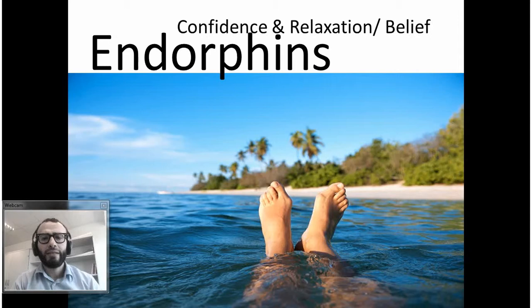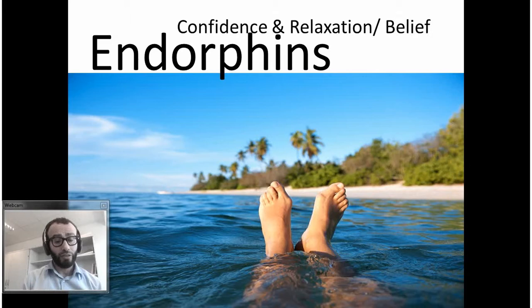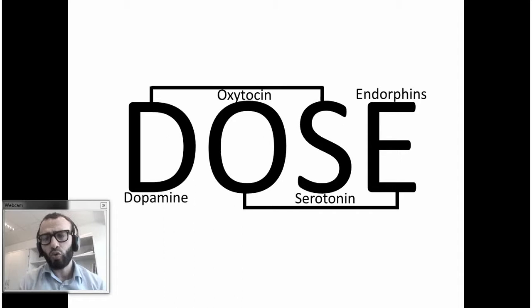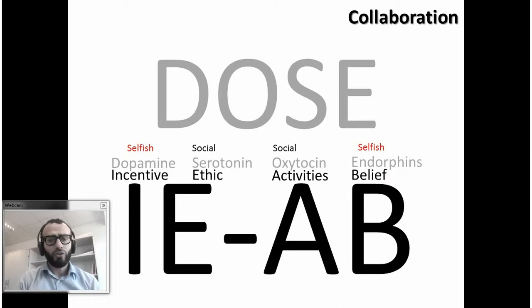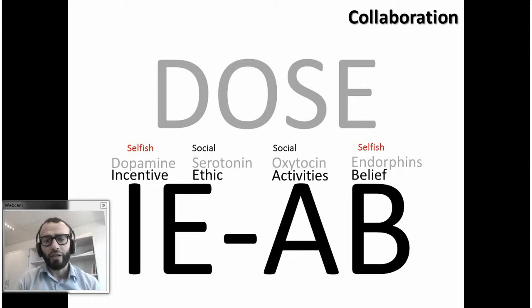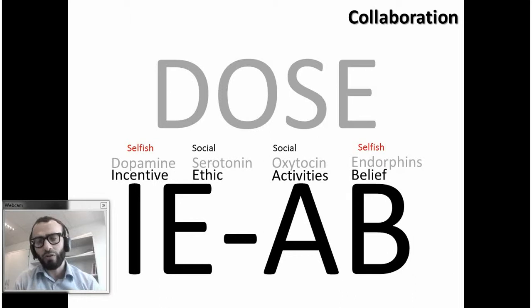Endorphins are known for confidence, relaxation, and are related to belief. You cannot collaborate with others until you feel relaxed and until you have confidence in the person you are trying to collaborate with. This kind of feeling is what endorphins try to do. So this is what we call DOSE — Dopamine, Oxytocin, Serotonin, Endorphins. These chemicals are fundamentally responsible for collaboration. We try to connect them with our factors: to enhance incentives, you need to support dopamine; to increase ethics and trustworthiness, you need to support serotonin; oxytocin is responsible for social recognition; and belief and confidence can be enhanced by endorphins.